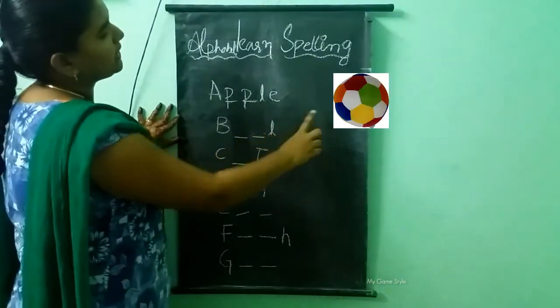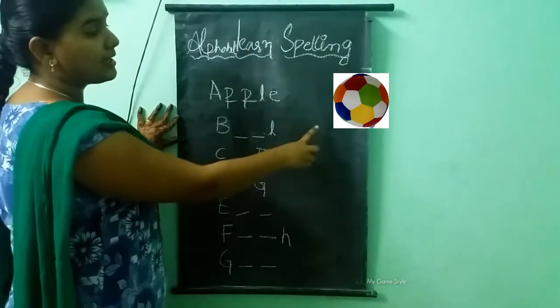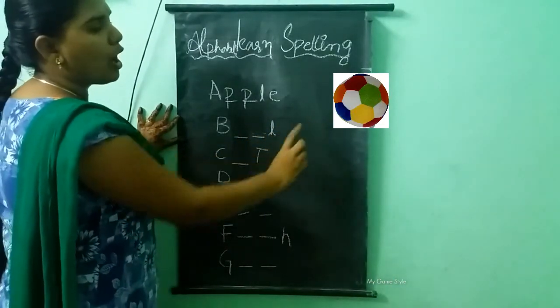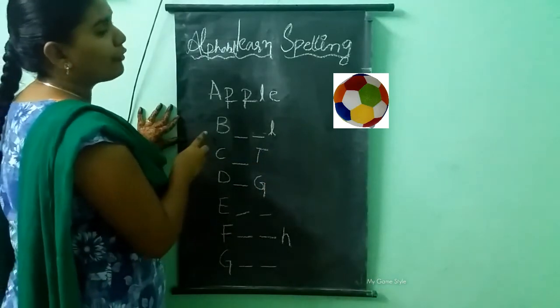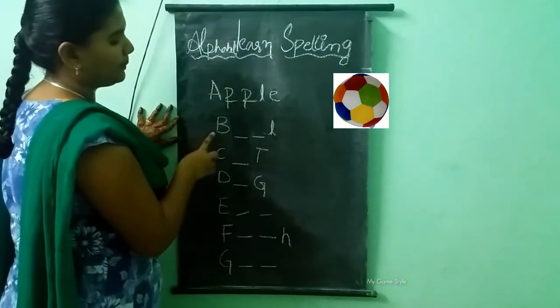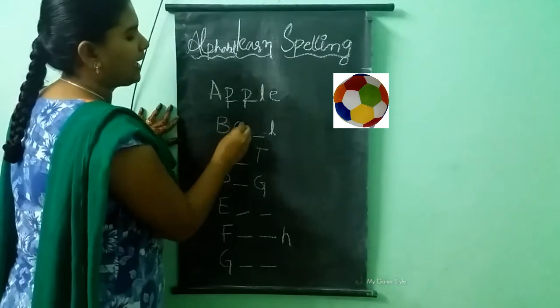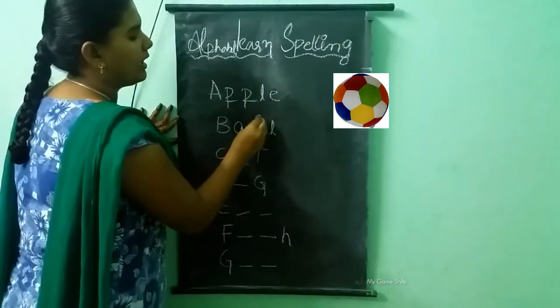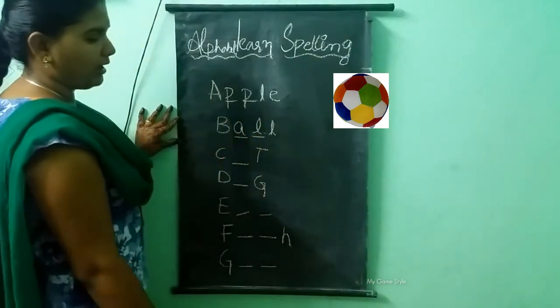What picture is this? This is a ball. What is the spelling of ball? B-A-L-L. Ball.